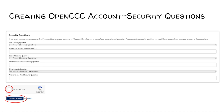Security Questions. Security questions are used to access your OpenCCC account in case you forget your password or username. Choose any of the following security questions and type the answers to them. Make sure you remember the answers to the security questions you chose. Once everything is complete, click I am not a robot, then wait for the loading symbol to finish and click Create My Account.